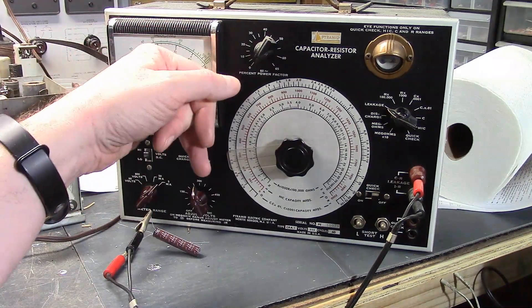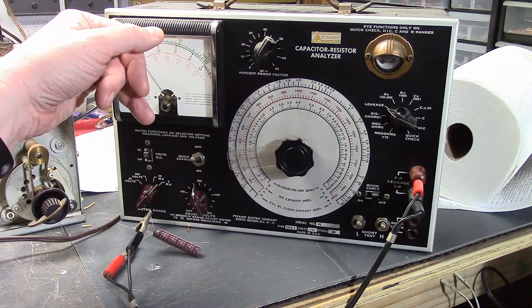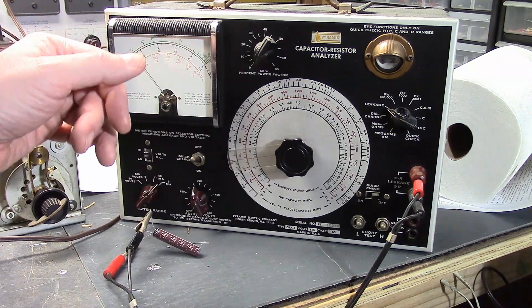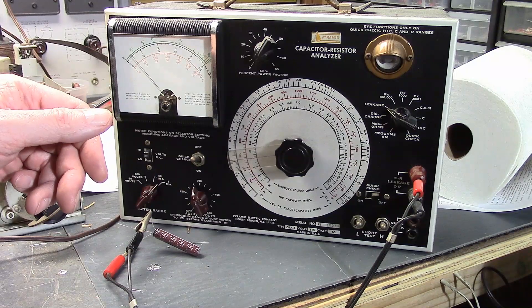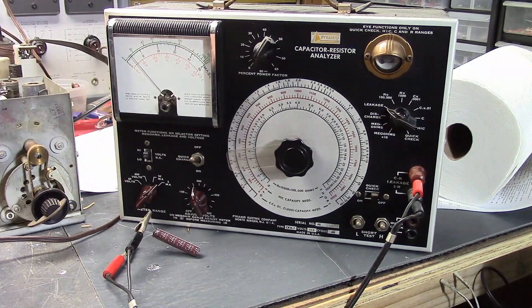We'll just jump right up to 400. Five milliamp range. And dropping. We are at 800 microamps, 600 microamps. And dropping. About 200 microamps now.